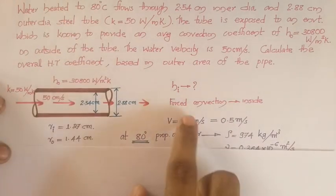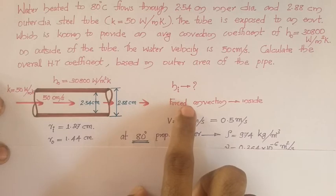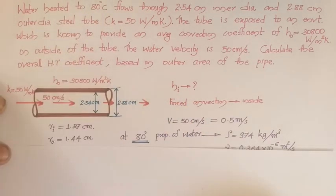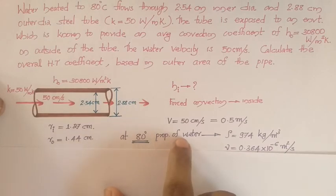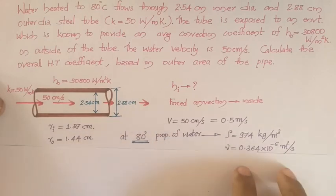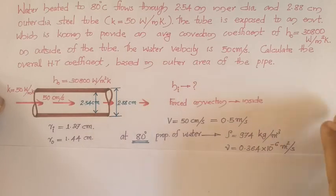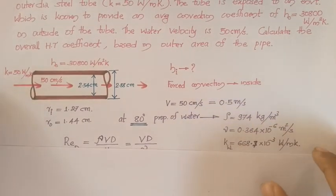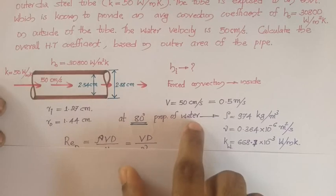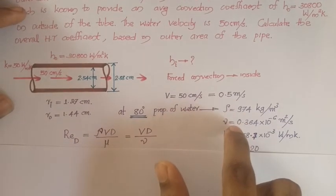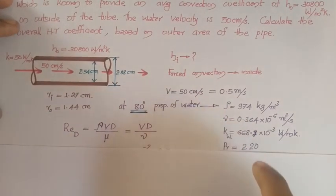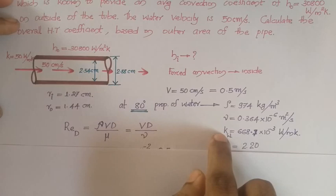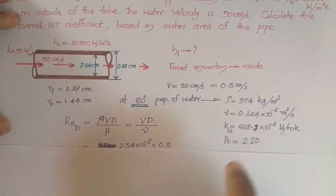First, we will find the properties of water at 80°C, since no other temperature is mentioned. From the data book, under properties of liquids — specifically properties of water — at 80°C we can find the density, viscosity, thermal conductivity of water (kw fluid), and the Prandtl number.